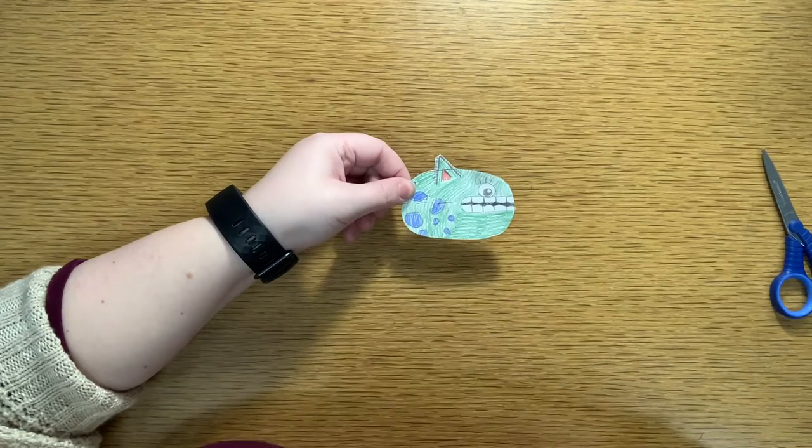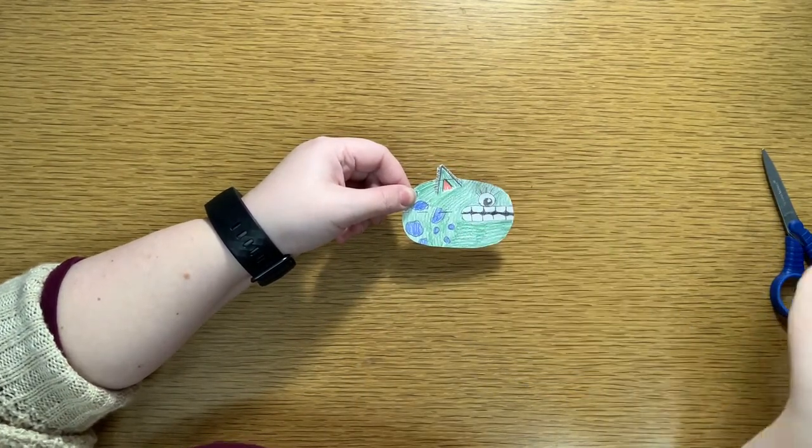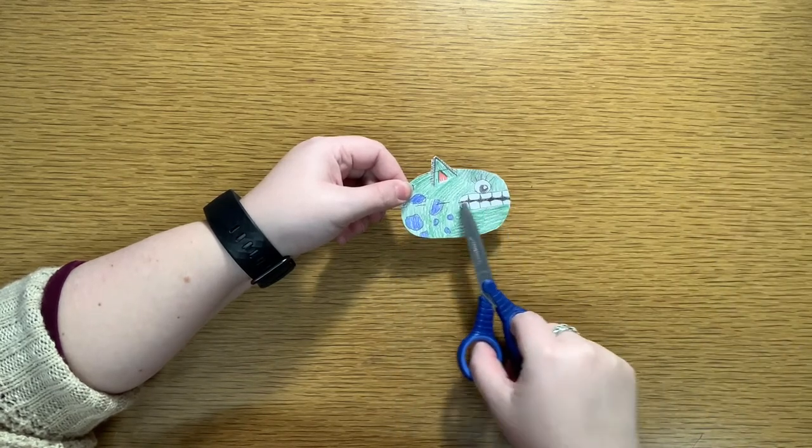All right, now that I've cut out my puppet, for my clothespin puppet, I actually have one more cutting step. There's one more thing I have to cut. And that's across this dotted line here in the middle.